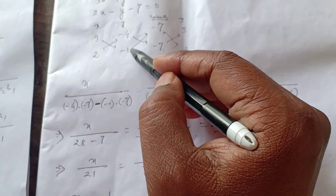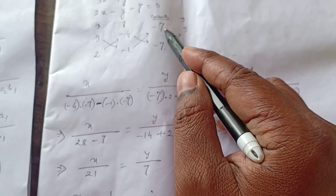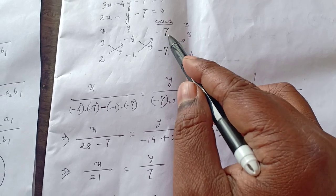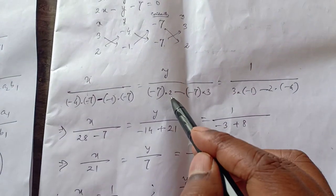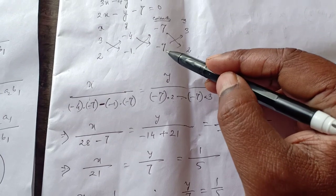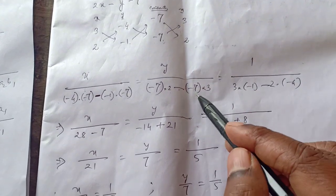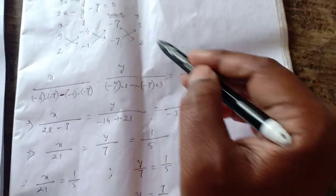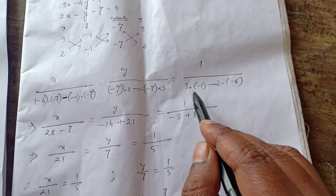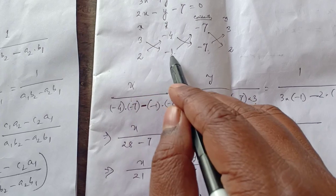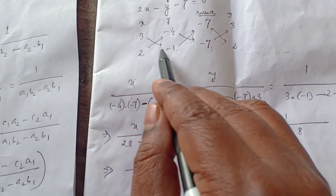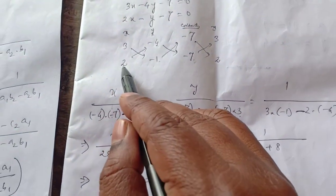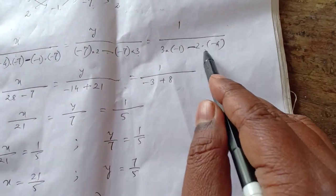Below 1, we shall not write the constants. We shall cross multiply the coefficients of X and Y. First multiply 3 into minus 1, then minus 2 into minus 4. So below X we have: minus 4 into minus 7 minus (minus 1 into minus 7). Below Y: minus 7 into 2 minus (minus 7 into 3). Below 1: 3 into minus 1 minus 2 into minus 4.